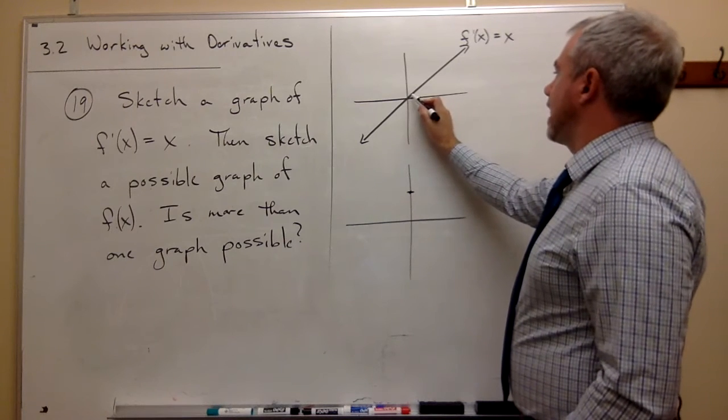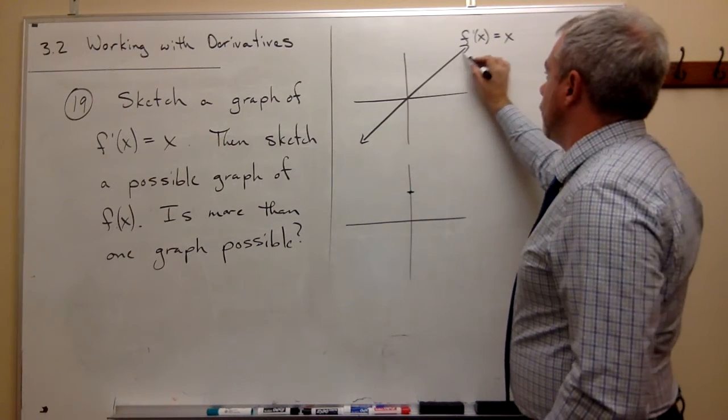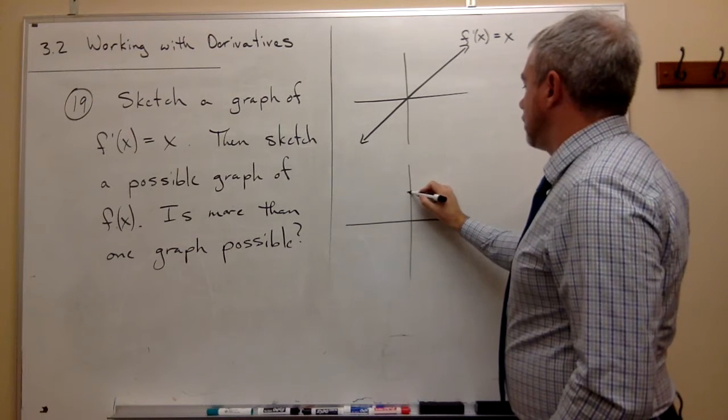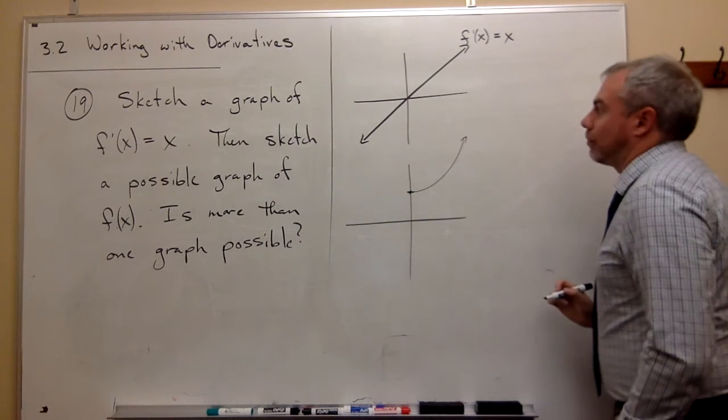Then what happens as I head to the right? Well the slopes are positive and they're getting more and more positive. So the slopes are positive and they're getting more and more positive.